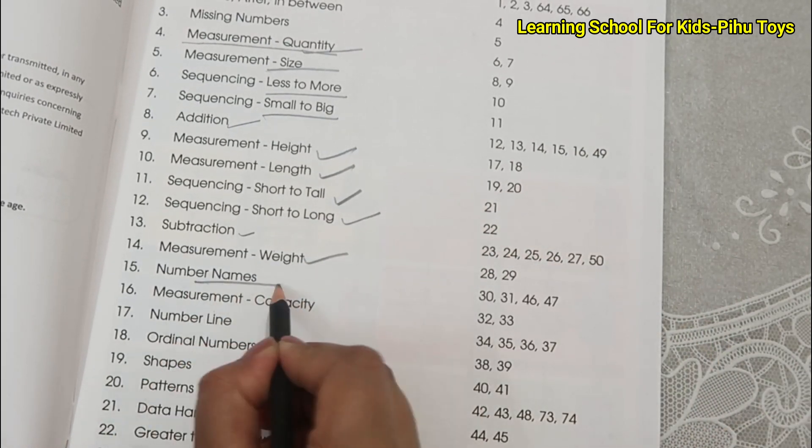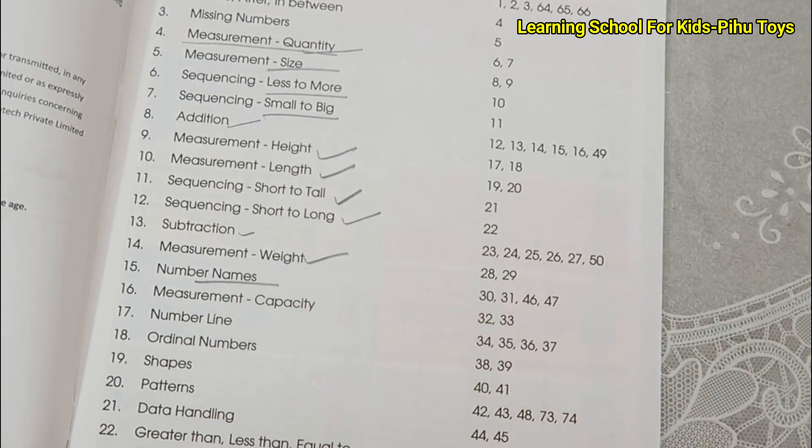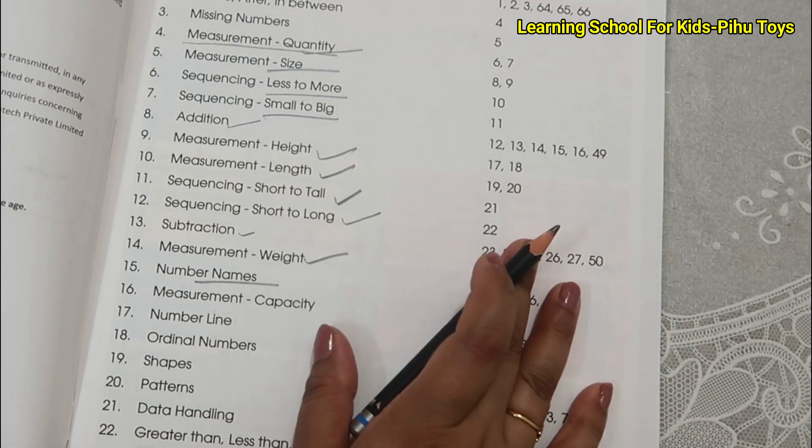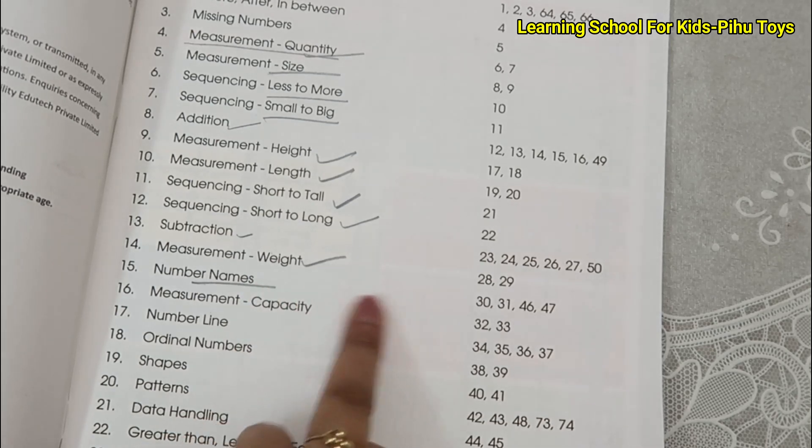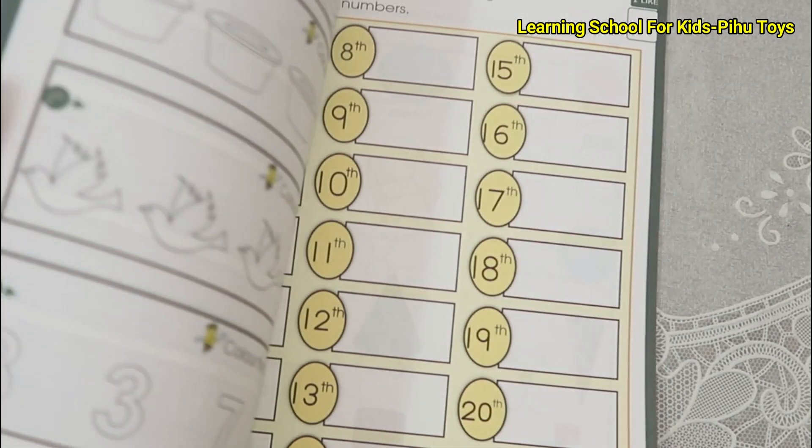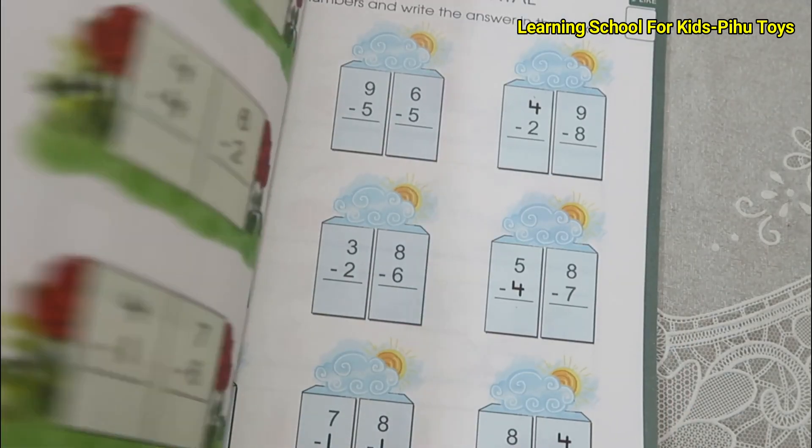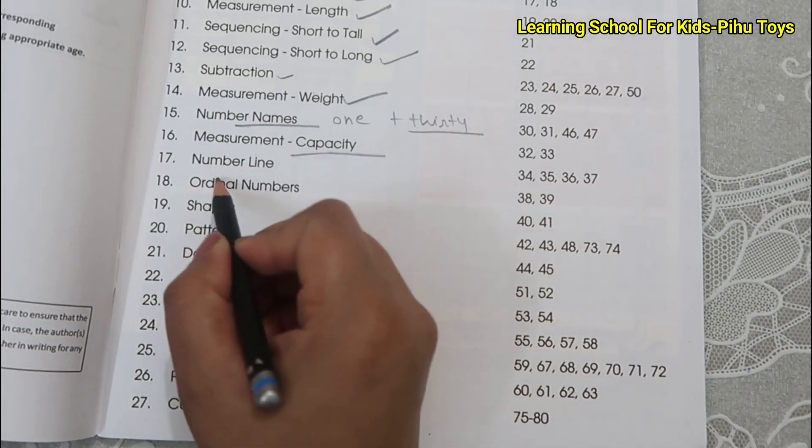Numbers name, numbers 1 to 20, then 1 to 50, measurement capacity, number line.